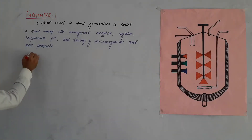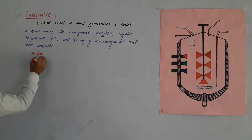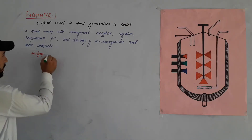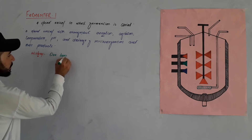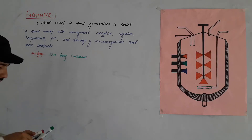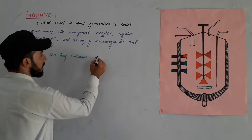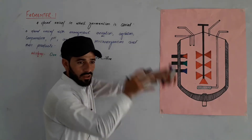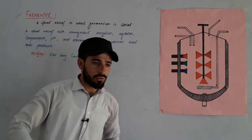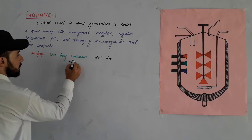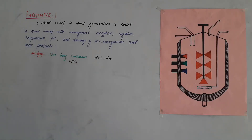Now a brief history of fermenters. The first fermenters were used and their size was around 20 liters. In 1944, the best start for fermentation technology came about, and fermenters of small sizes were developed.